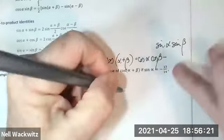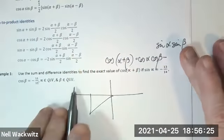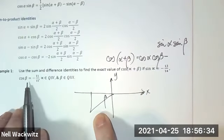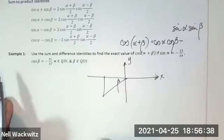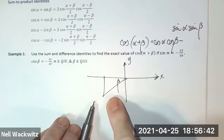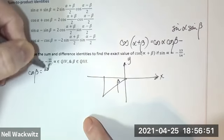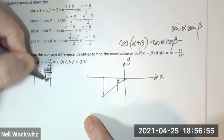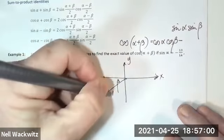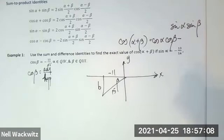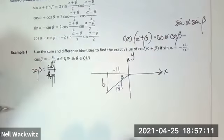So what we're going to do is draw triangles. Beta is in quadrant three. We know that the cosine of beta is negative 11 over 15. Remember that in quadrant three, x and y are negative. Cosine is adjacent over hypotenuse, and the hypotenuse is always positive. So our hypotenuse will be 15 and the adjacent side will be negative 11.